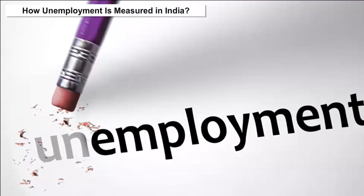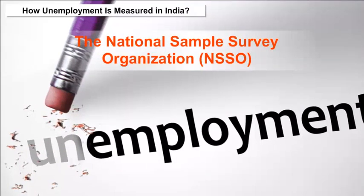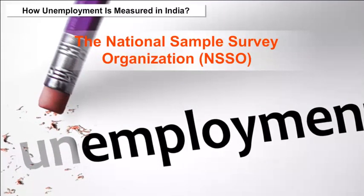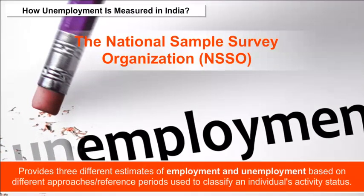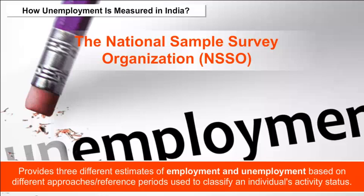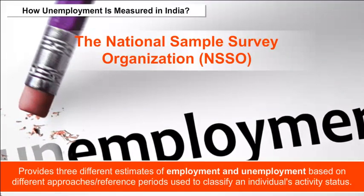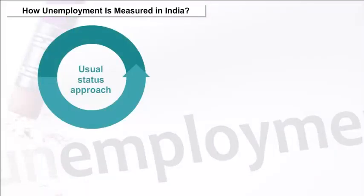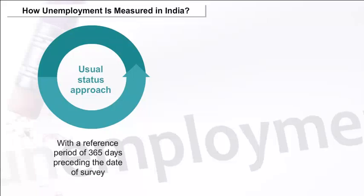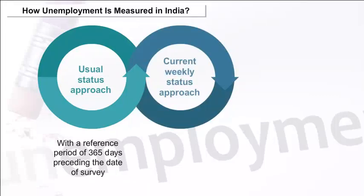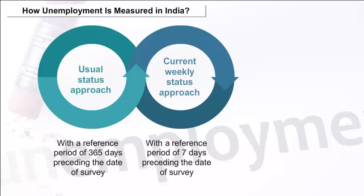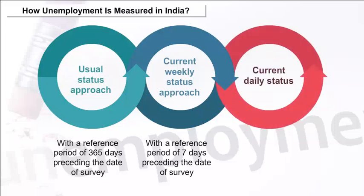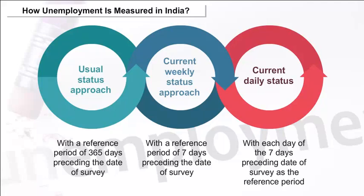How unemployment is measured in India: The National Sample Survey Organization (NSSO) provides three different estimates of employment and unemployment based on different reference periods. These are: the usual status approach with a reference period of 365 days preceding the date of survey; the current weekly status approach with a reference period of seven days preceding the date of survey; and current daily status, with each day of the seven days preceding the date of survey as the reference period.